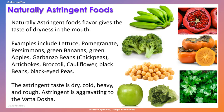Last but not least is the naturally astringent food flavor, which gives a taste of dryness in the mouth. Examples include lettuce, pomegranate, persimmons, green bananas, green apples, garbanzo beans or chickpeas, artichokes, broccoli, cauliflower, black beans, and black-eyed peas. The astringent taste is dry, cold, heavy, and rough. Astringent taste is aggravating to the vata dosha.